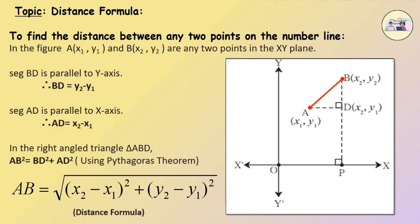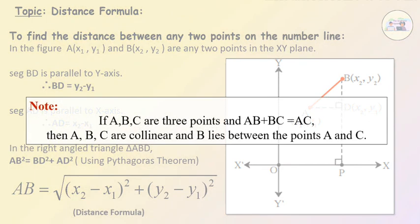If A, B, C are three points and AB plus BC equals AC, then A, B, C are collinear points and B lies between points A and C. Practice Set 5.1.